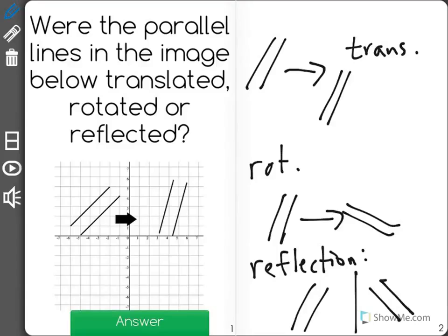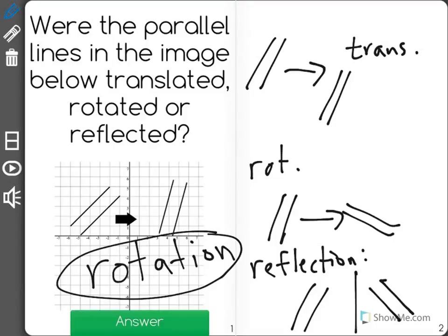In this case, I could see that we don't have a translation because they're turned a different direction, and we don't have a reflection because it's not mirrored over the y-axis. We have a rotation. As you can see, the parallel lines are slightly turned in a different way, making this rotated across a certain point.